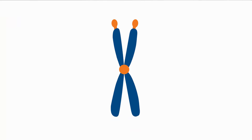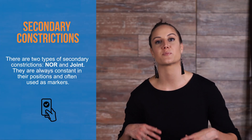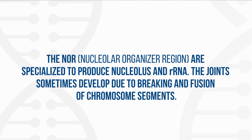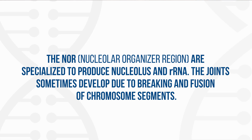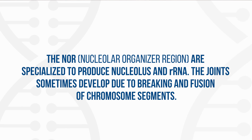Secondary constrictions. Besides the centromere, a chromosome may have one or more secondary constrictions. The part of a chromosome beyond a secondary constriction is called a satellite, which remains attached to the main part of chromosomes by a thread of chromatin. The chromosomes having a satellite are called SAT chromosomes. There are two types of secondary constrictions: NOR and joint. They are always constant in their positions and often used as markers. The NOR, or nuclear organizer region, are specialized to produce nucleolus in rRNA. The joints sometimes develop due to breaking and fusion of chromosome segments.